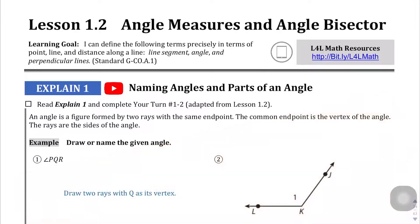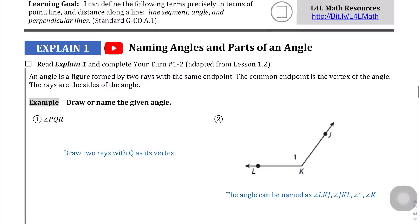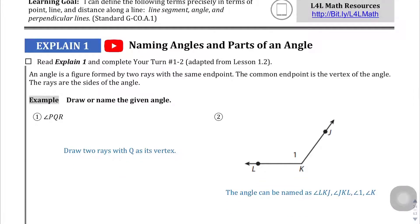Welcome to Lesson 1.2, Angle Measures and Angle Bisector, on page 24. Here on this page, the Explain 1 section doesn't give you very much information on how to do this, so I'm going to take us through it.